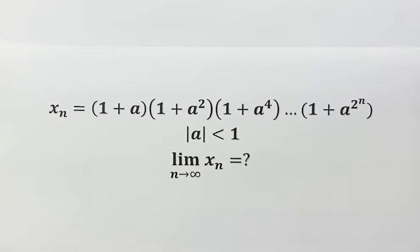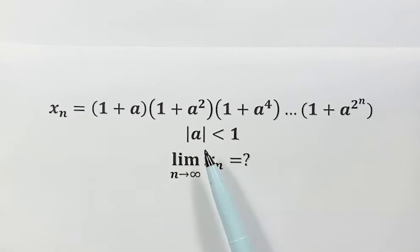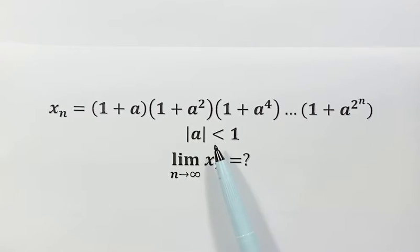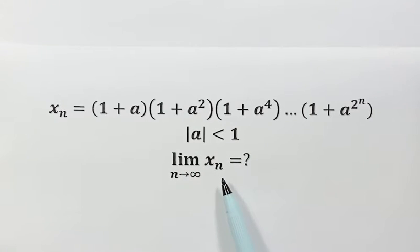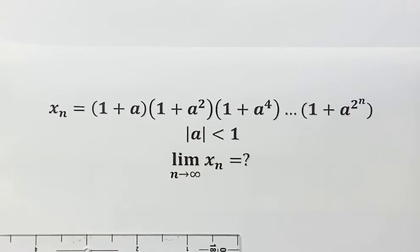Hello everyone, here's a question. Given the sequence x sub n, and also given that the absolute value of a is less than 1, we want to know what is the limit of the sequence as n goes to infinity. How do we solve this question?